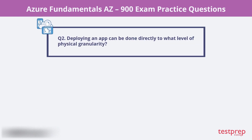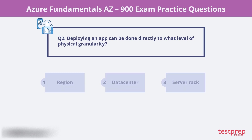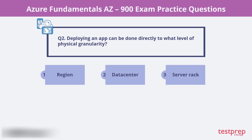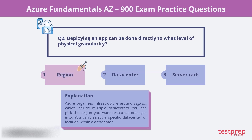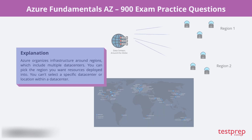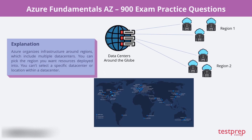Question 2. Deploying an app can be done directly to what level of physical granularity? Is it region, data center, or server rack? Azure organizes infrastructure around regions, which include multiple data centers. You can pick the region you want resources deployed into. You can't select a specific data center or location within a data center.